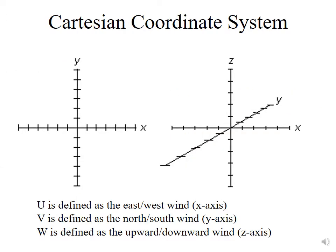We also use the Cartesian coordinate system where x is in the east-west direction, y is in the north-south direction, and z is in the up-and-down direction. We define the east-west wind along the x-axis as u, the north-south wind along the y-axis as v, and the up-down wind along the z-axis as w.